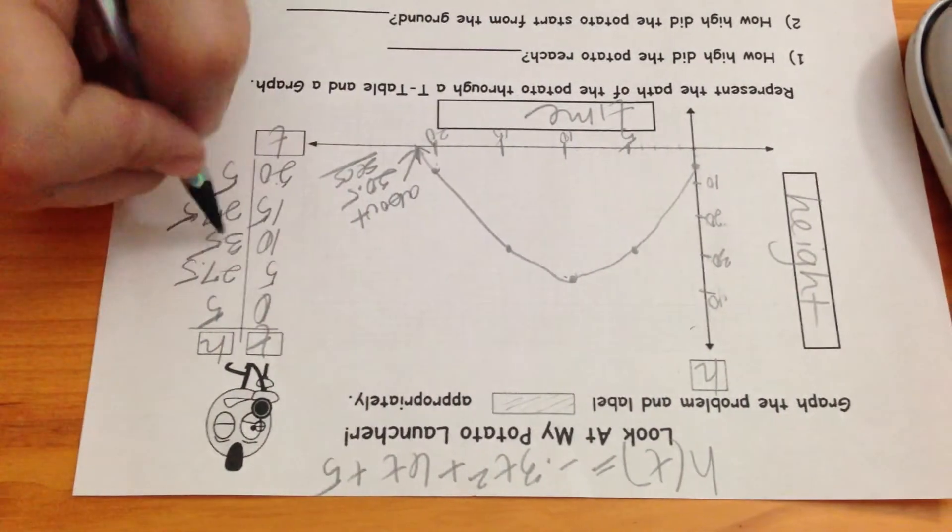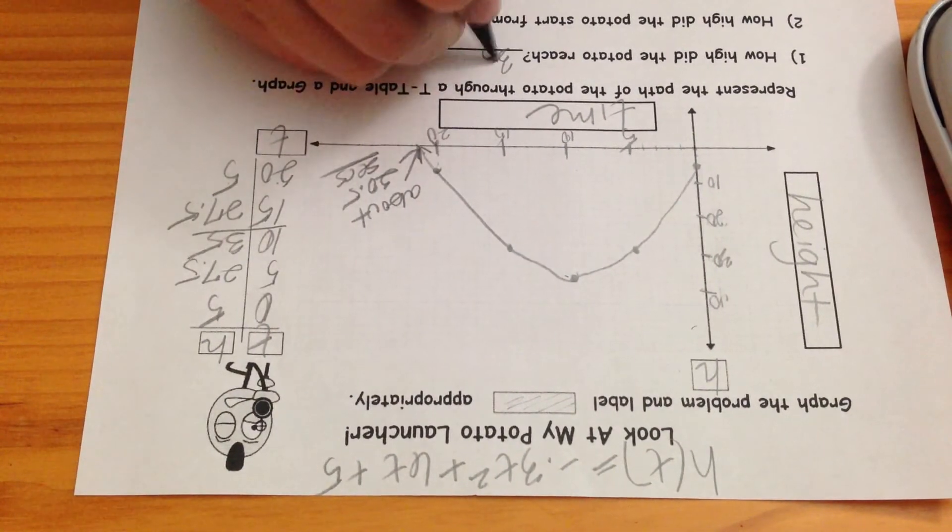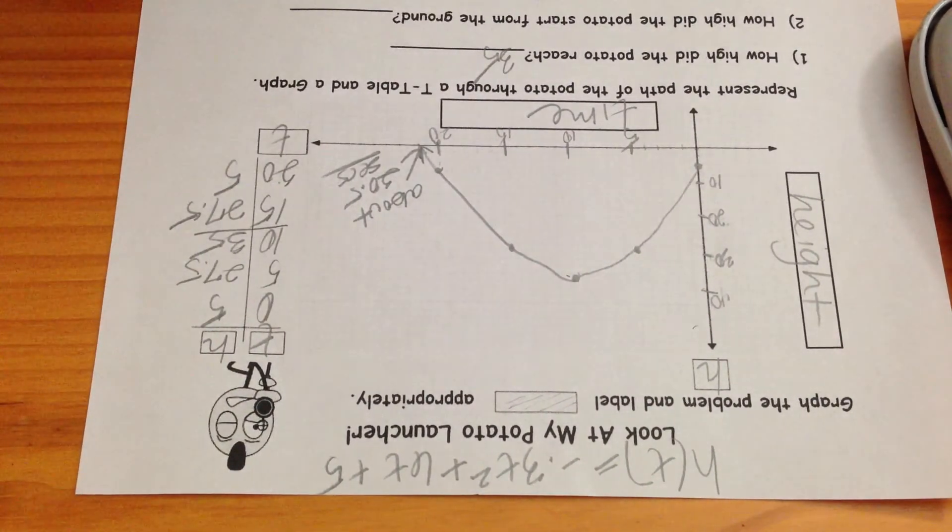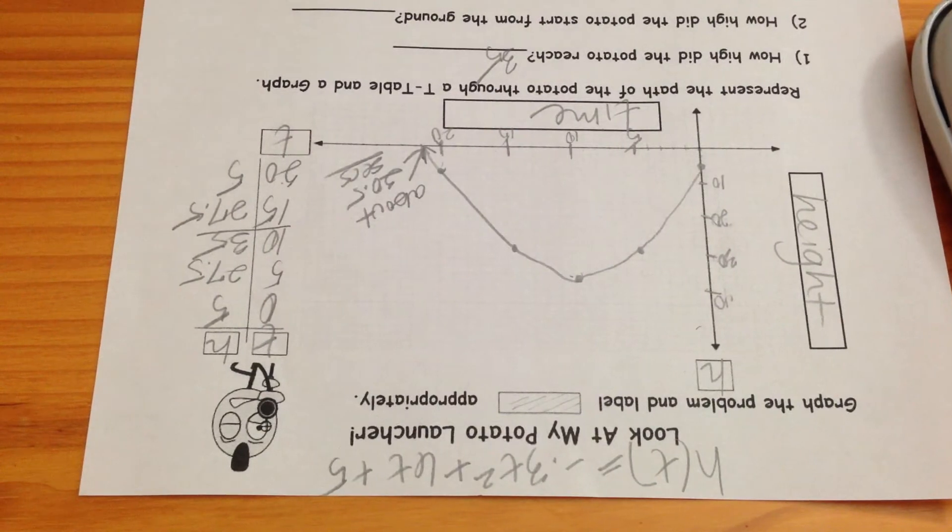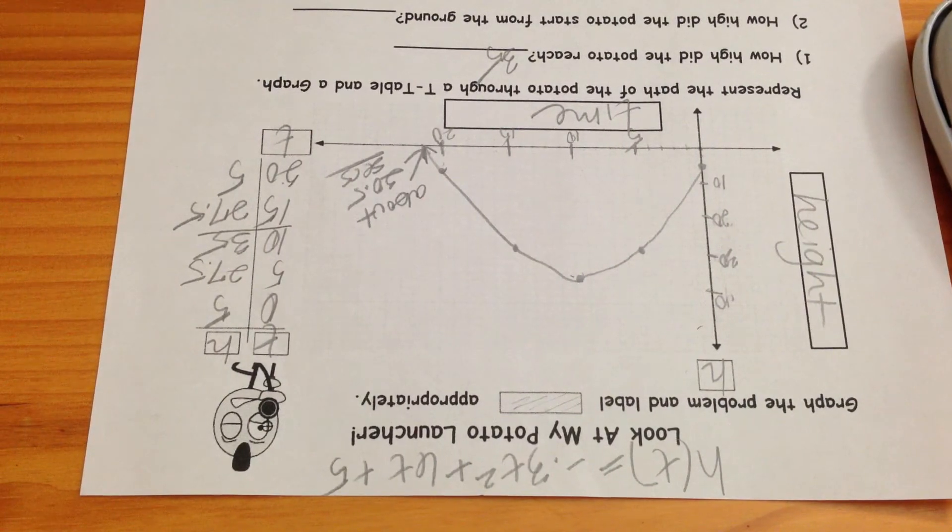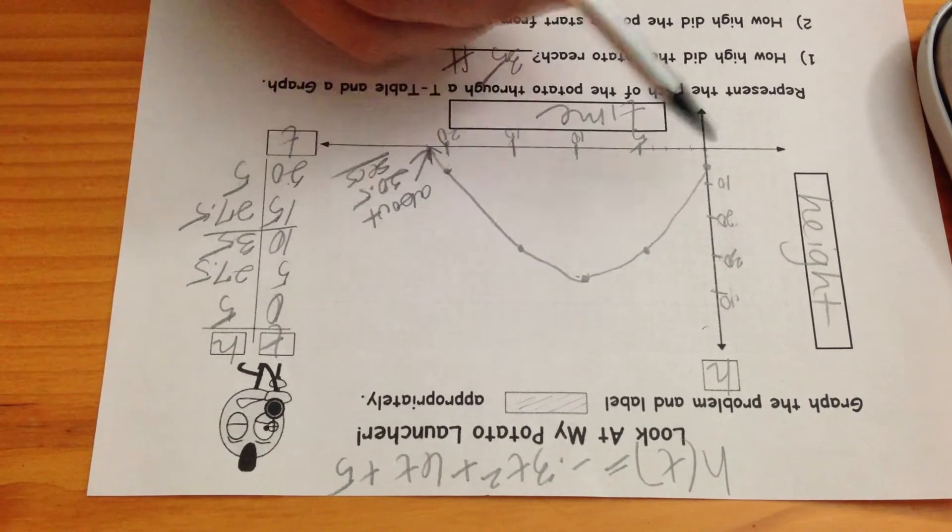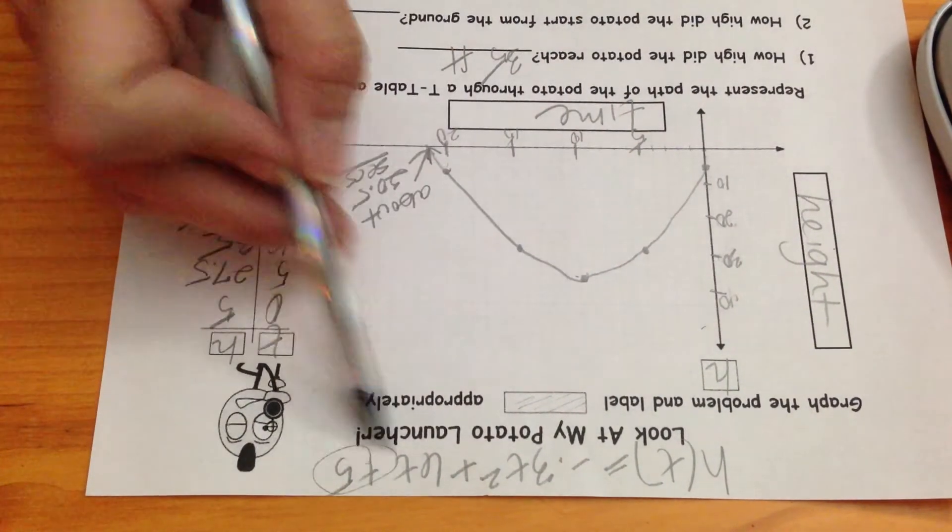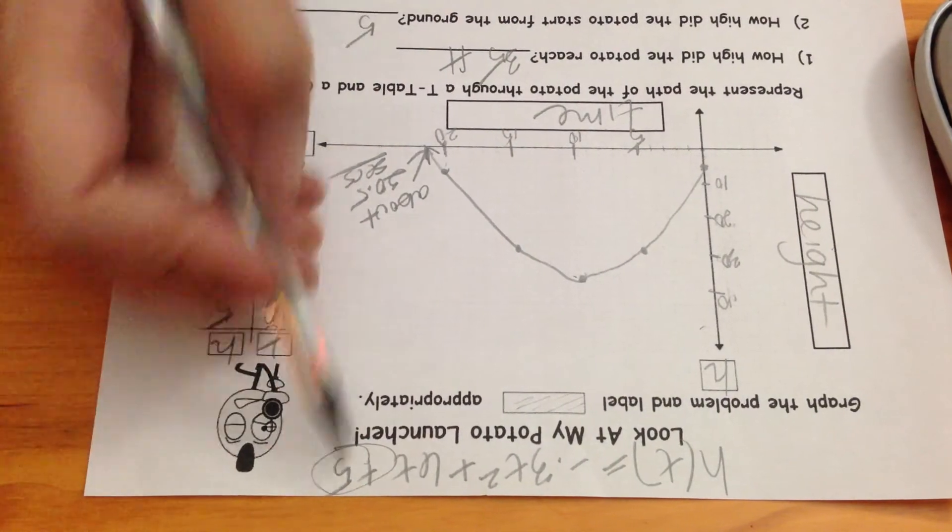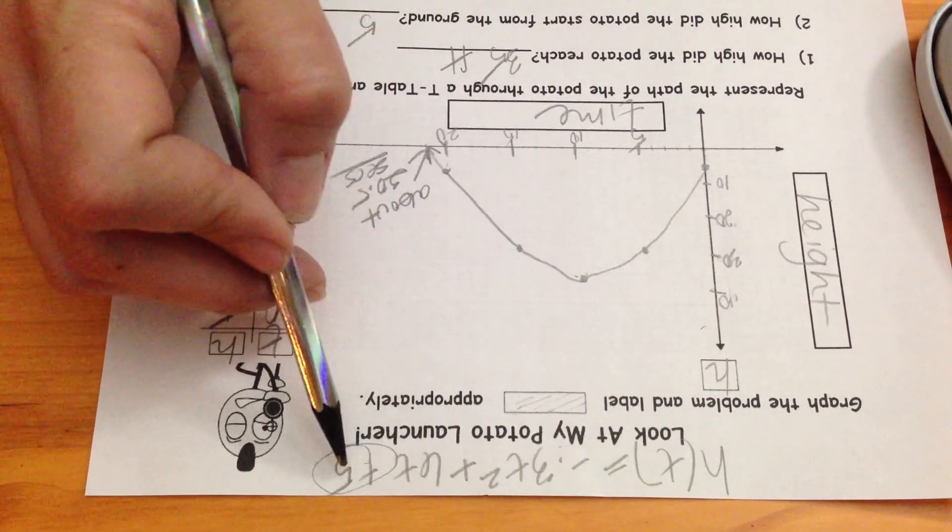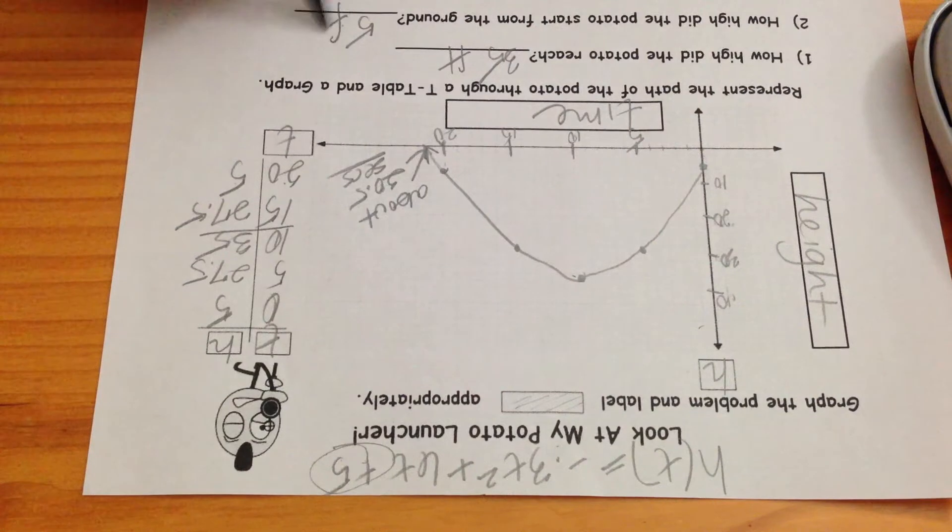How high did the potato reach? Well, that was the maximum, so 35. We're talking about feet. How high did the potato start from the ground? That's going to be the y intercept, that's always that c value, there it is, that 5. Ax squared plus bx plus c, so 5 feet.